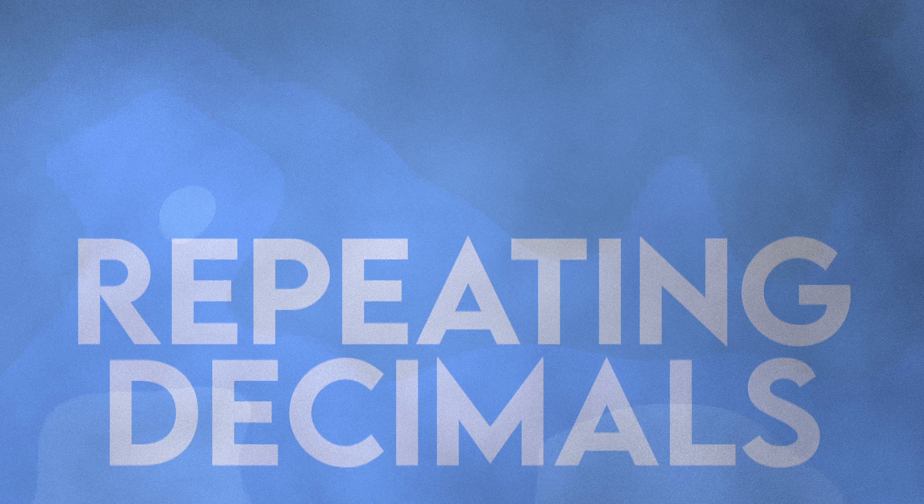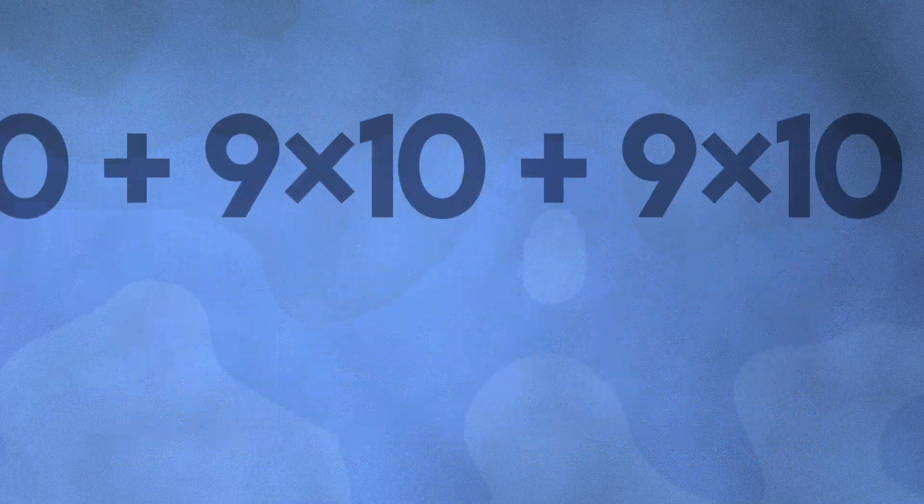P-adic numbers are often seen to be an extension of rational numbers unique from the real numbers we are familiar with. They are basically repeating decimals but on the left hand side, which can be written as an infinite sum that, against all odds, converges.